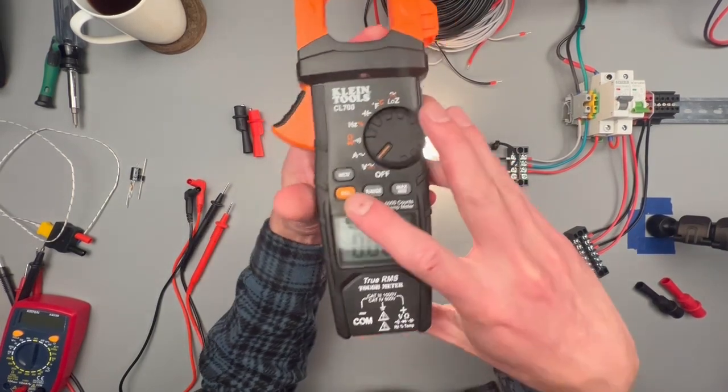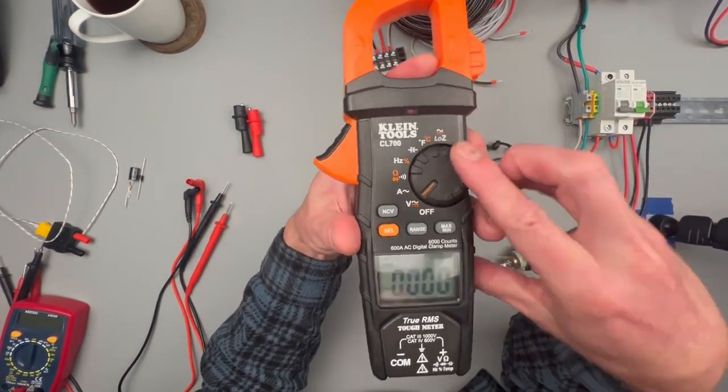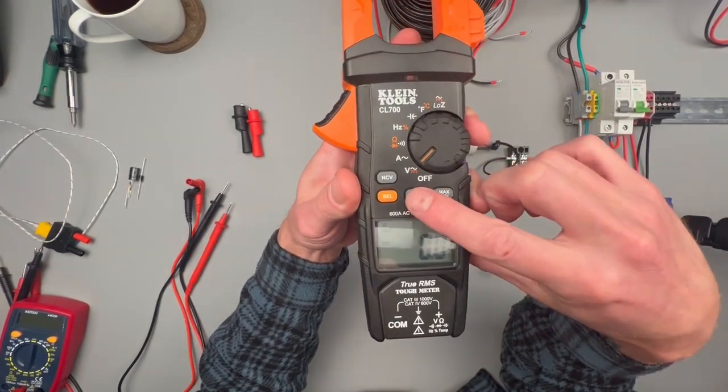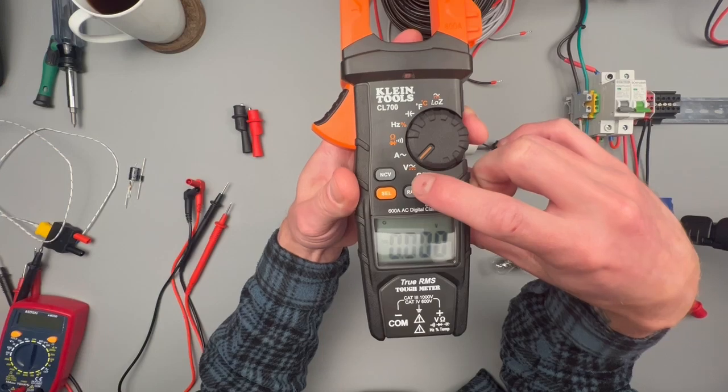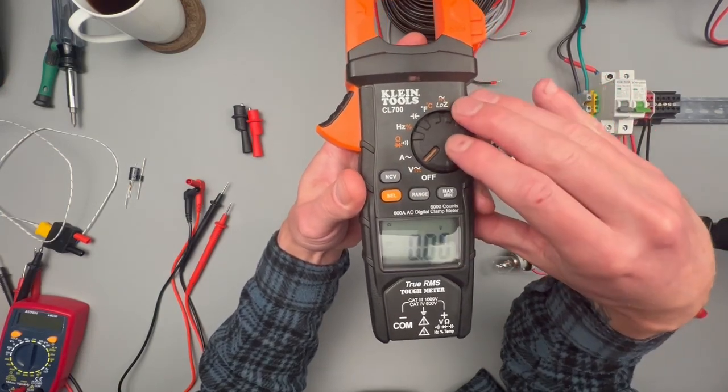It has this selection switch here, so anything on your dial indicator that's in orange, you'll use the selector switch to go ahead and switch that over. You have a range switch for different resolutions. Sometimes it will auto range. Sometimes you need to manually select the range.